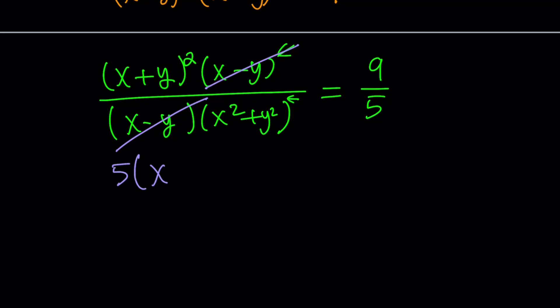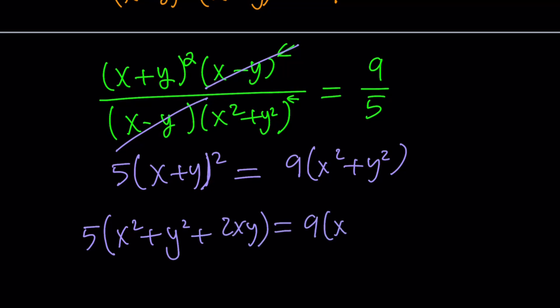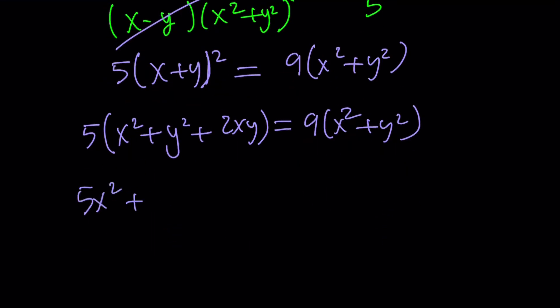5 times x plus y squared equals 9 times x squared plus y squared. Let's go ahead and expand. This becomes 5 times x squared plus y squared plus 2xy. That's how I usually write it. And then, we could actually distribute here, but let's do it at the same time.